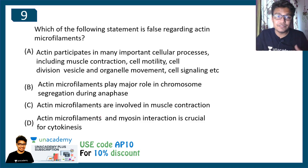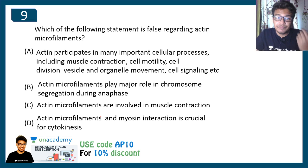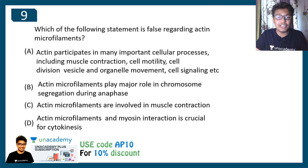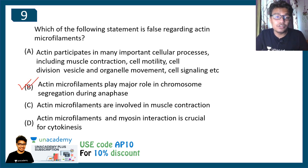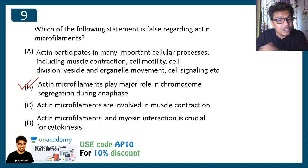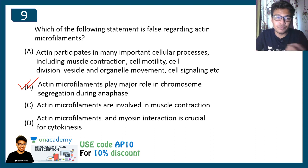Question nine: which of the following statements is false regarding actin microfilaments? Option A: actin participates in many cellular processes including muscle contraction, cell motility, cell division, vesicle and organelle movement, and cell signaling. Option B: actin microfilaments play a major role in chromosome segregation during anaphase. Option C: actin microfilaments are involved in muscle contraction. Option D: actin microfilament and myosin interaction is crucial for cytokinesis. The correct answer is option B — actin microfilaments do not play a vital role during anaphase. Chromosome segregation depends on the dynamic instability of microtubules, not actin microfilaments.